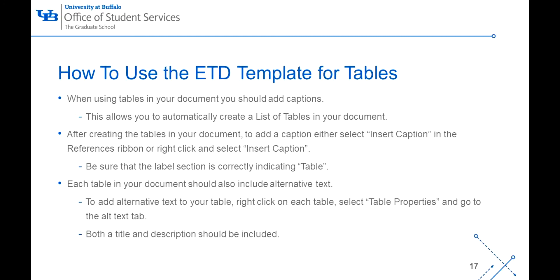When using tables in your document, you should add captions. This allows you to automatically create a list of tables in your document. After creating the tables, to add the captions, either select Insert Caption in the References ribbon or right-click and select Insert Caption. Make sure the Label section is correctly indicating Table. Each table in your document should also include alternative text. To add alternative text to your table, right-click on each table and select Table Properties. Go to the Alt Text tab and enter both a title and description.